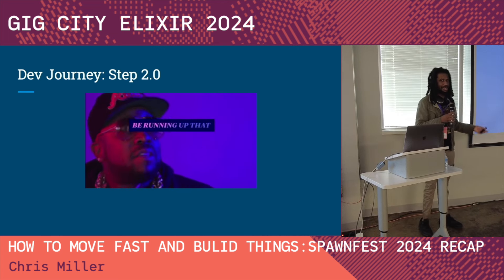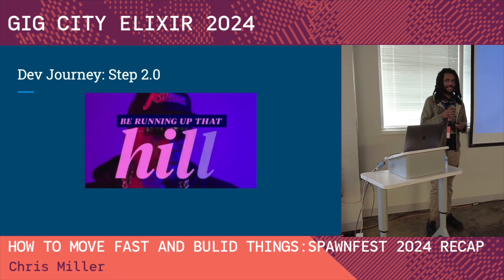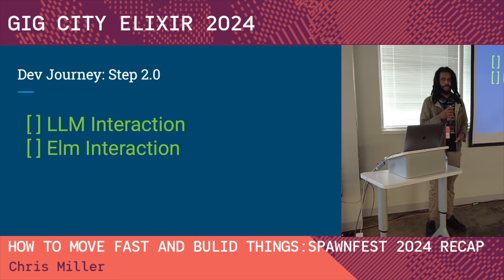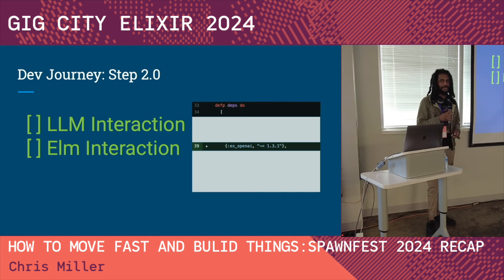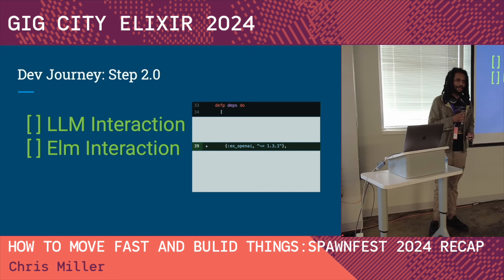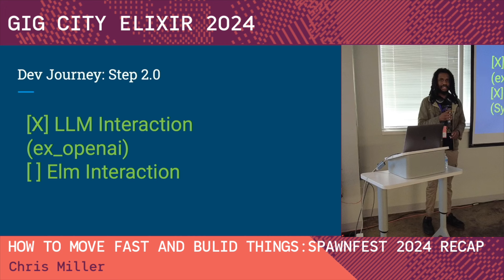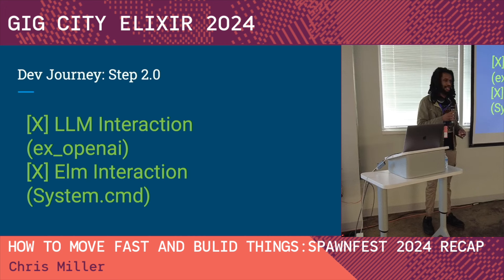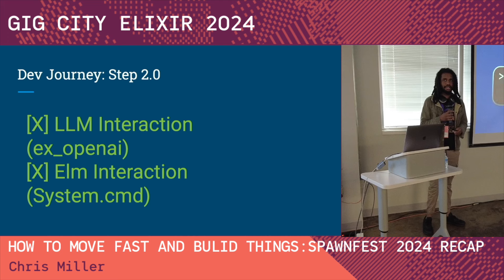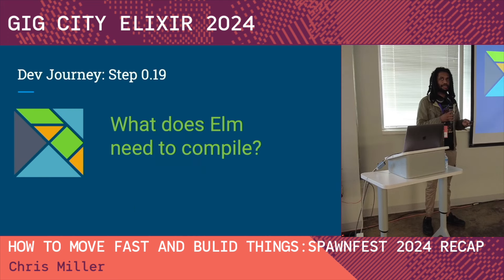In this first part we haven't started development yet — we have our idea and we're going to be running up the Shape Up hill, figuring out what's needed. We know we need a way to talk to a large language model and a way to compile Elm. We tackled the first part with an external library called ex_openai — it's really easy to get your API calls to OpenAI using this library. That solved the problem super easily and didn't take any time.